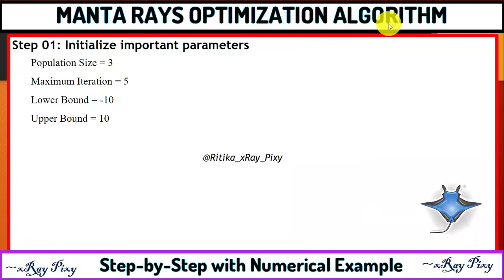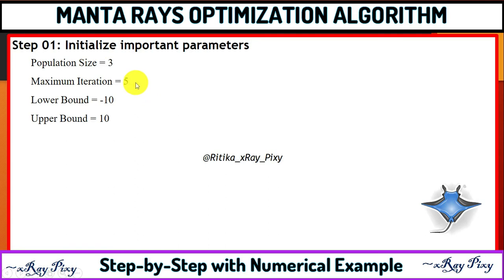The first step is parameter initialization. Here we will initialize all the important parameters, for example population size, maximum number of iterations, lower bound, and upper bound. In this example, population size is 3, maximum iterations is 5, with the lower and upper bounds as shown.